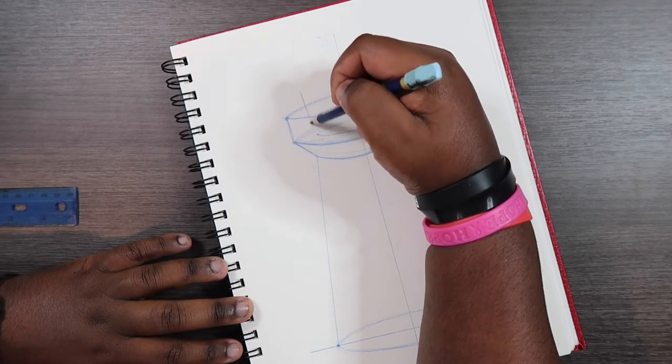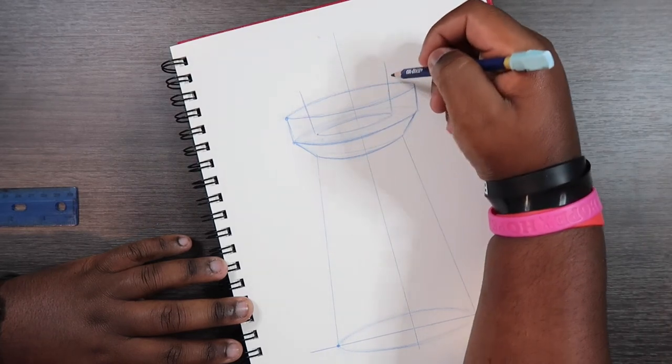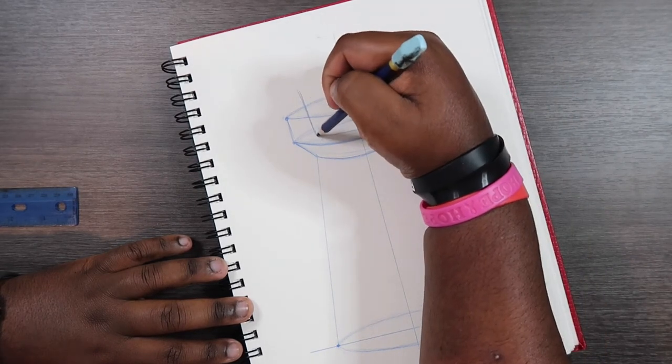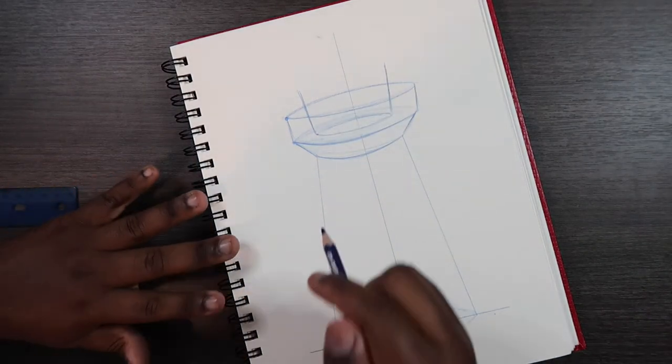Okay, and then I'm going to go up some more on the ellipse. And this is the part of the lighthouse where the light is going to go. Like the big giant light bulb, that's where that's going to go.